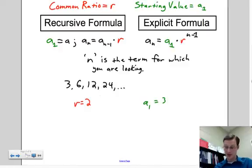The recursive formula - you just state you start off with 3. So a₁ = 3. To find the nth term, take the previous term, aₙ₋₁, the one before it, and multiply it by 2. That's the recursive formula.